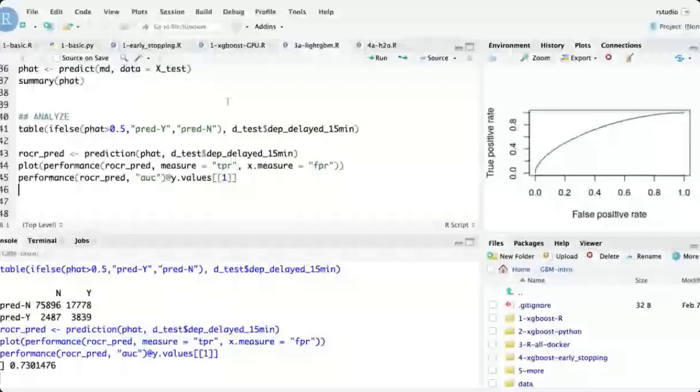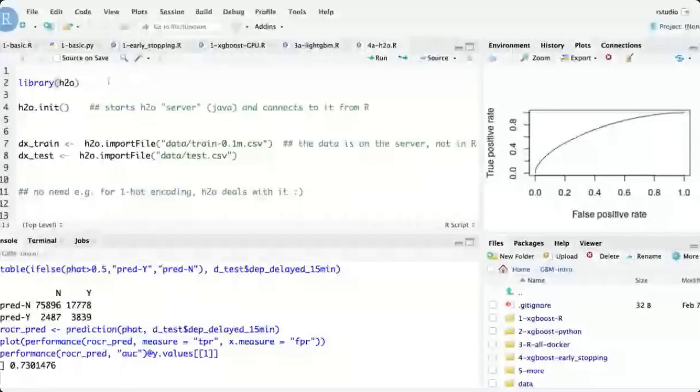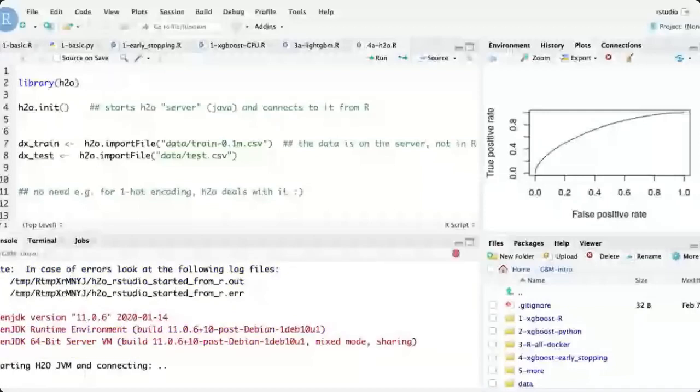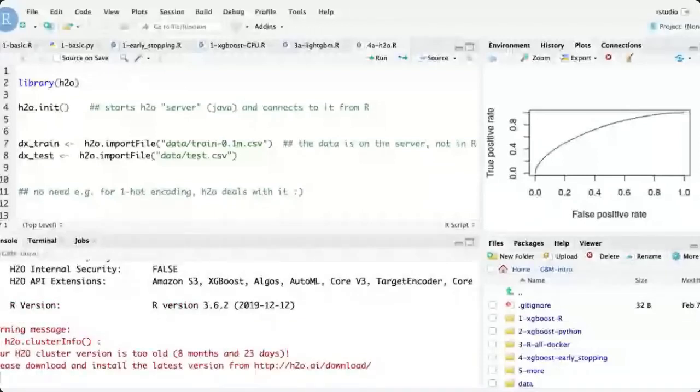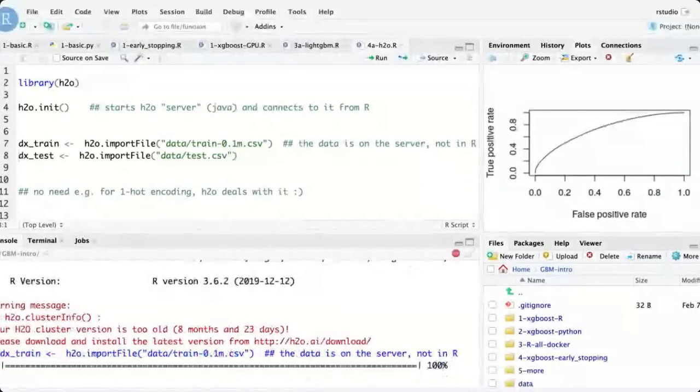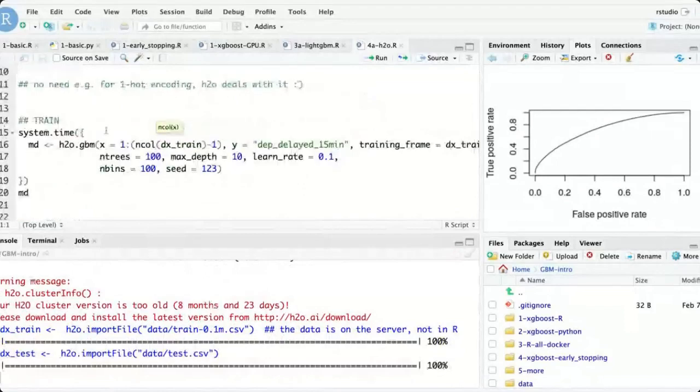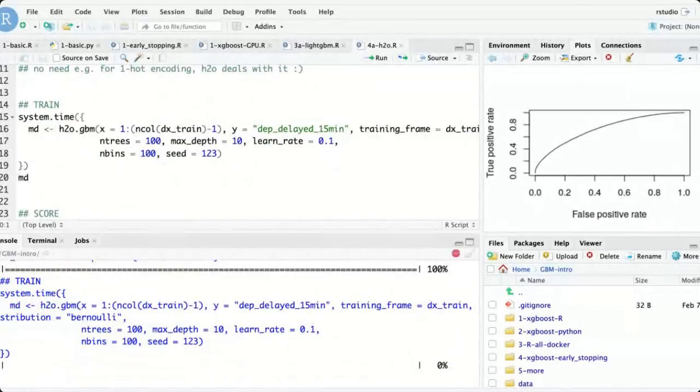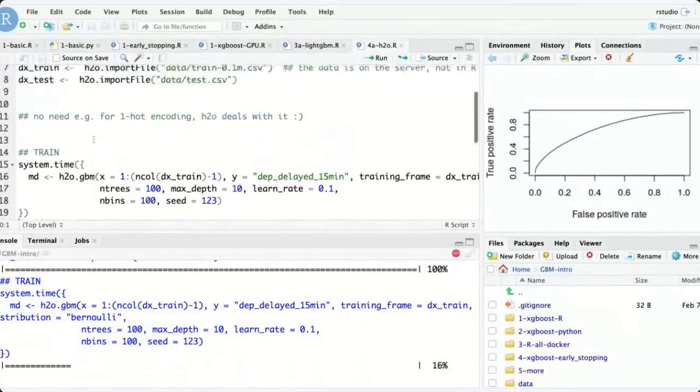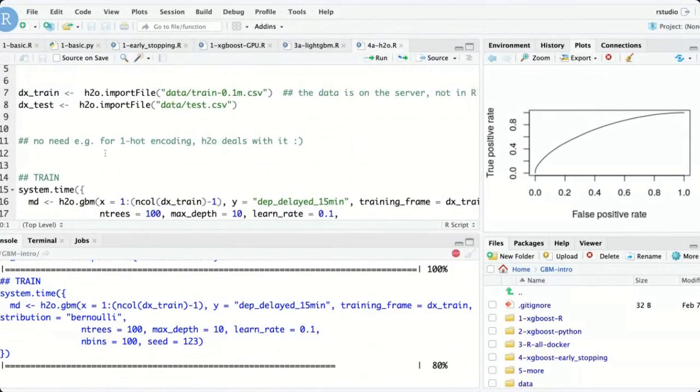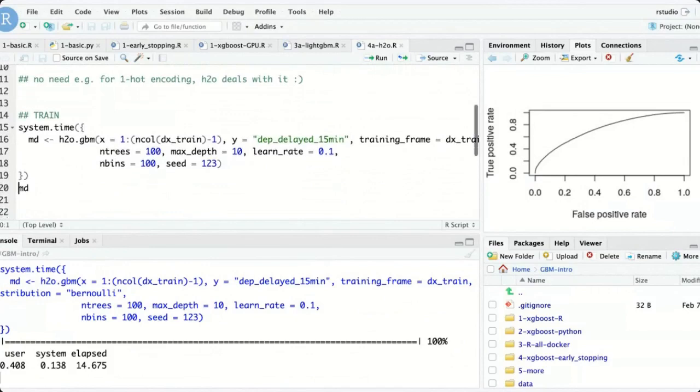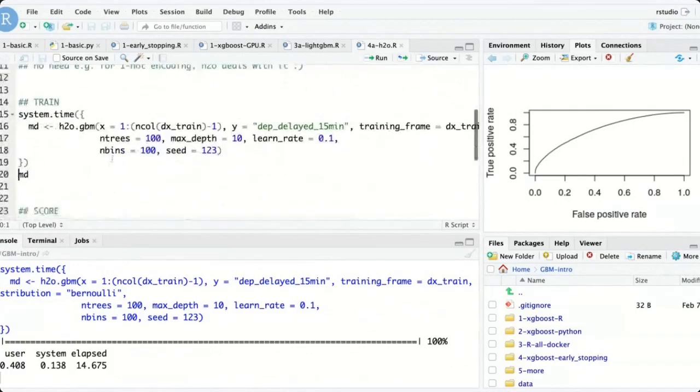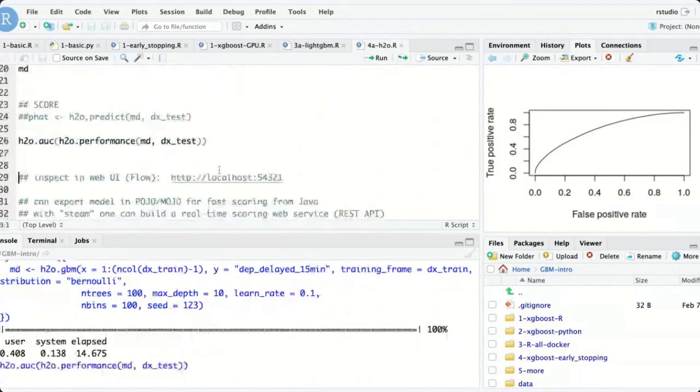And the last product is H2O. So H2O is Java. So it's going to spin up a separate process. And then the R or the Python client is going to connect. So you're going to need to upload the data. And then training is similarly easy. It's just this one line of code. But you can see here that H2O doesn't need, you don't need to do one hot encoding. So it handles the categorical data directly. So all you need to do is read the data and train. And then you can score and calculate the AUC. All right. I will switch back to slides now.